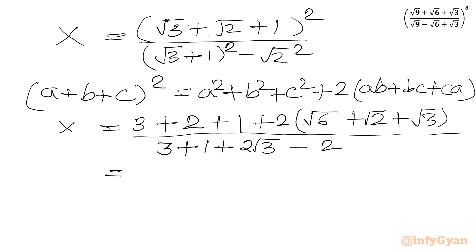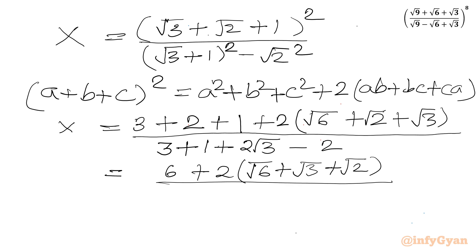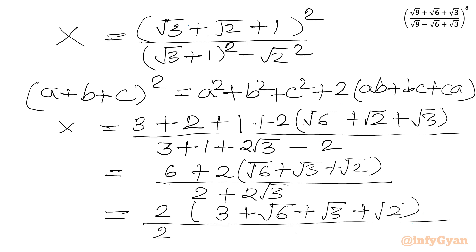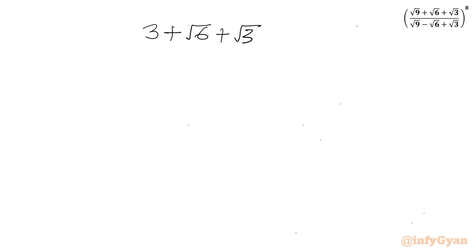So the numerator gives us 6 + 2(√6 + √3 + √2), and the denominator is 4 - 2 + 2√3, which is 2 + 2√3. Now 2 is common in both numerator and denominator, so after cancelling we get (3 + √6 + √3 + √2) over (1 + √3).